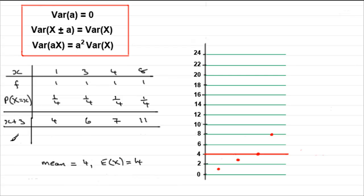Now suppose we took our observed values and this time we multiplied them by, say, 3. So we get 3X. So our new values, our new observed values, would be 1 times 3, which would be 3. 3 times 3, 9. 4 times 3, 12. And 8 times 3, they'll be 24.